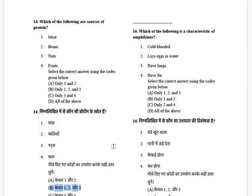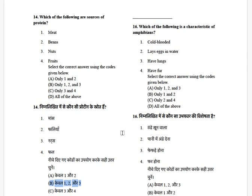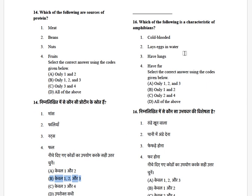Which of the following are characteristics of amphibians? The options are: cold-blooded, lays eggs in water, have lungs, and have fur. The answer is only options 1, 2, and 3 — amphibians don't have fur.